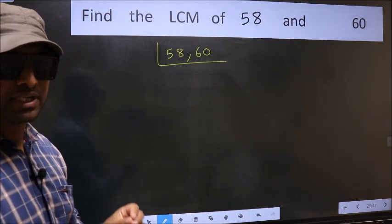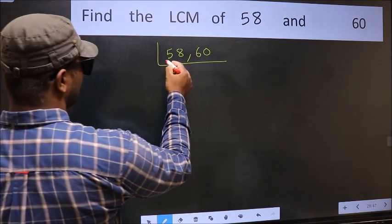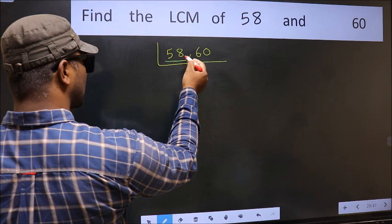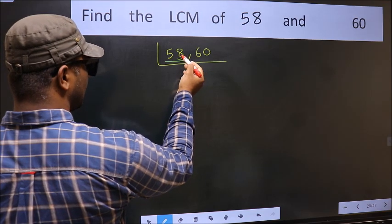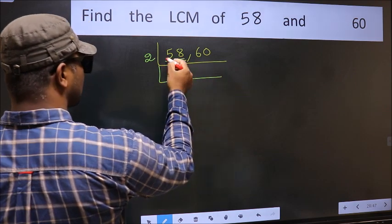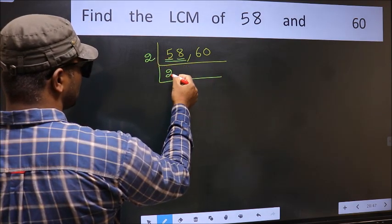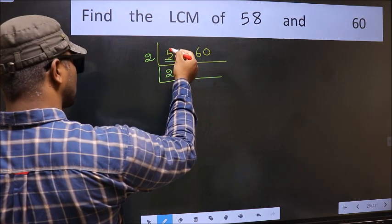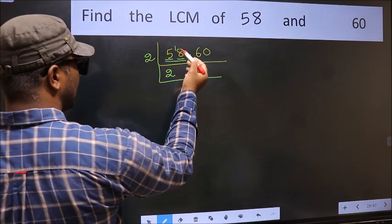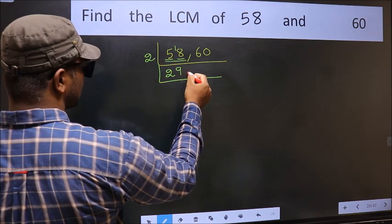Now you should focus on the first number, which is 58 here. For this number, last digit 8 is even, so take 2. First number 5. A number close to 5 in 2 table is 2 times 2 is 4. 5 minus 4, 1, 1 carried forward 18. When do we get 18 in 2 table? 2 times 9 is 18.